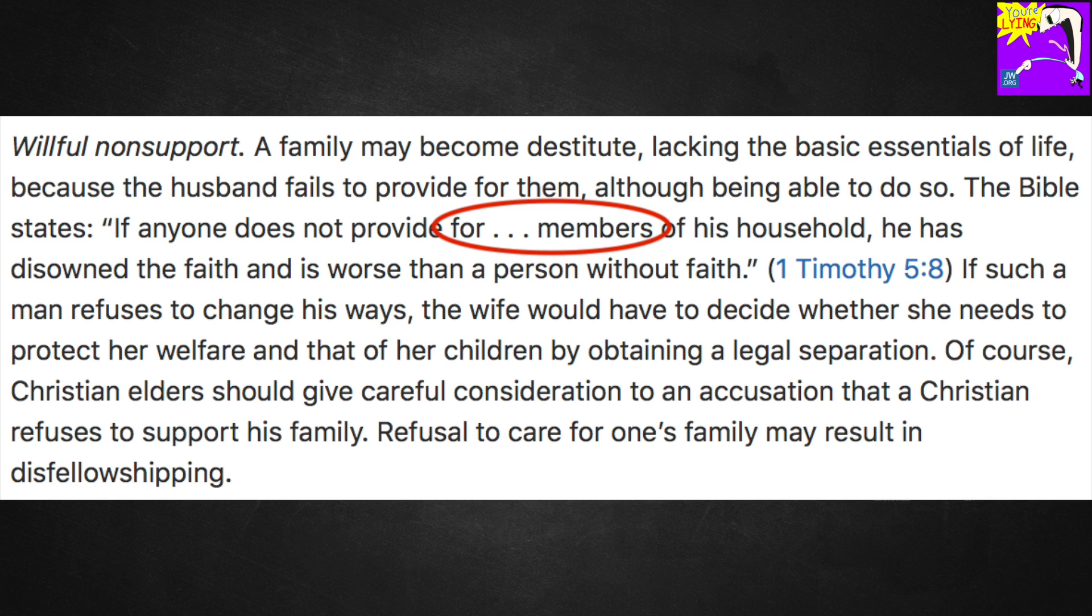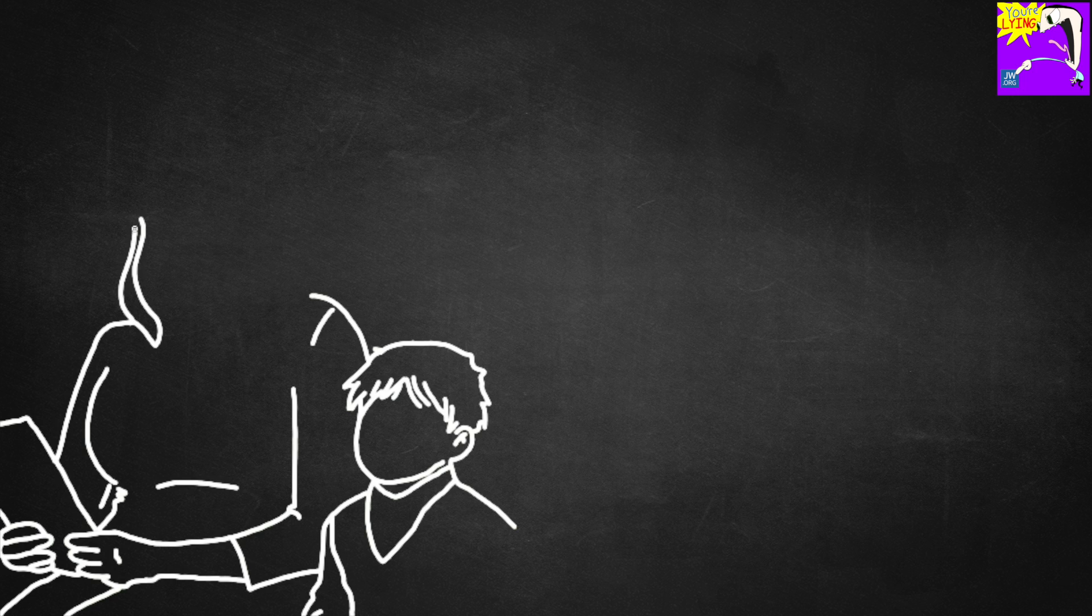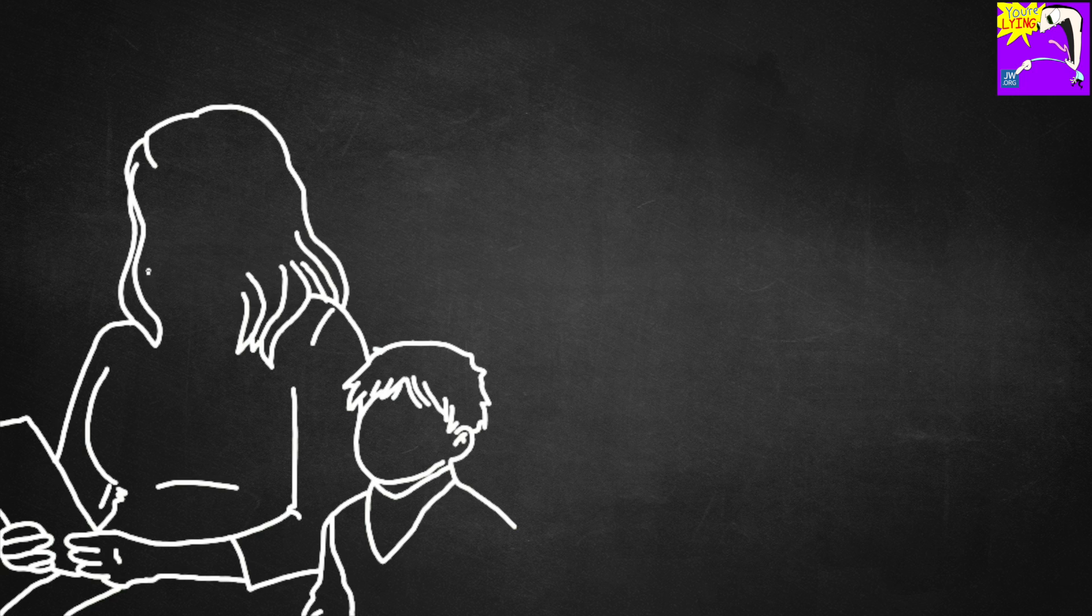Notice the dot dot dot there, the ellipsis. Jehovah's Witnesses put those things in everywhere. It's supposed to mean they took part of the quote out because it was irrelevant, but I've noticed a lot of the time they're just completely butchering the context to make the quote say what they want it to. So let's just take a quick look at what that verse says. 1 Timothy 5:8. Anyone who does not provide for their relatives and especially for their own household has denied the faith and is worse than an unbeliever. Huh. So they cut the part out that says anyone who doesn't provide for their relatives. That's odd. Is it because it kind of completely throws off the point they're trying to make?